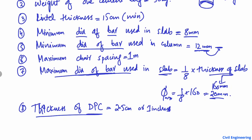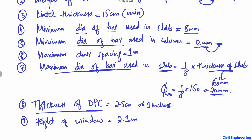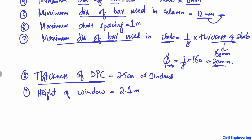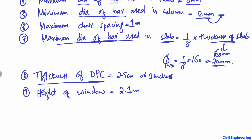The height of the window is also an important value. The height of a window is always 2.1 meters, though it may depend on specific standards. The most commonly used value for window height is 2.1 meters.